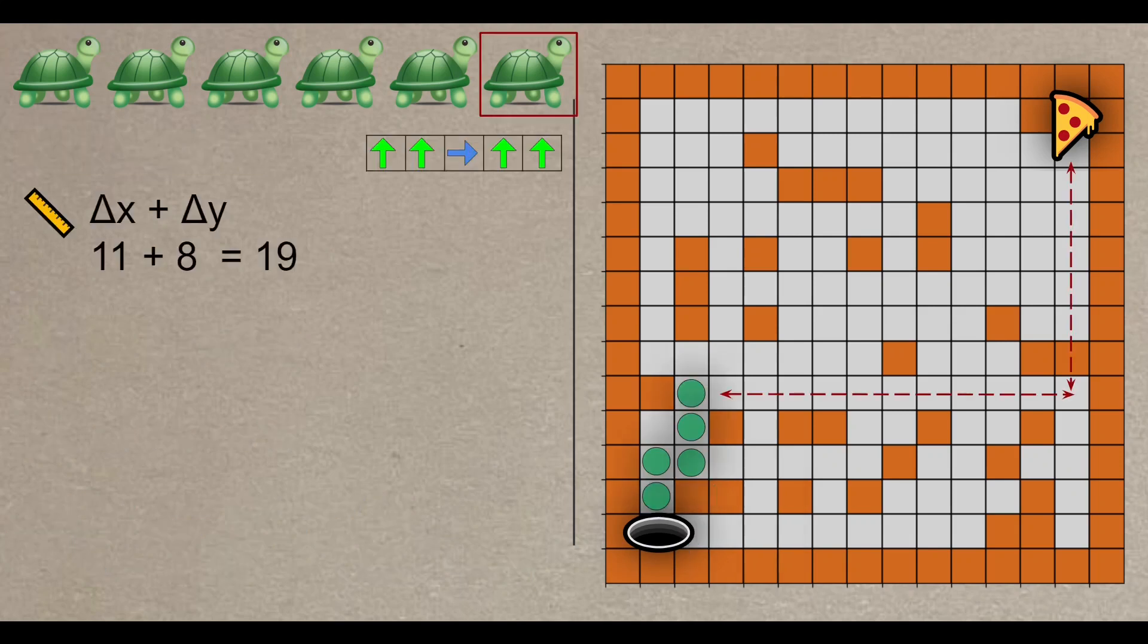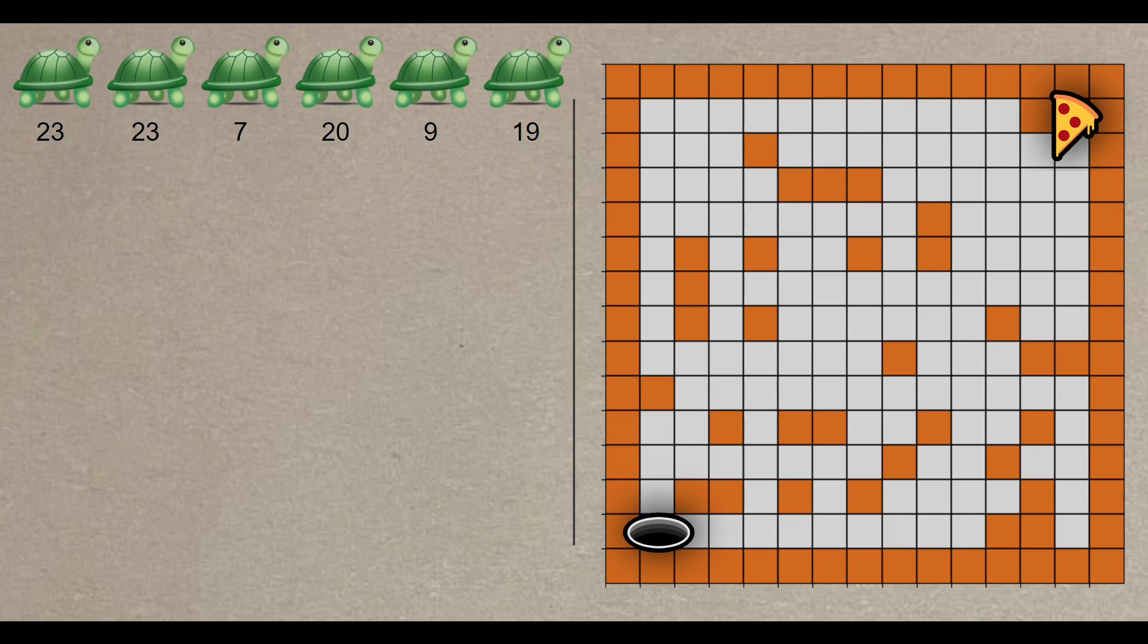As another example, this one is 19 blocks away from the pizza, and it doesn't cross any walls or retrace itself. So, we end up with a fitness score of 19. We apply this logic to every individual to evaluate their fitness.